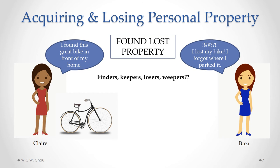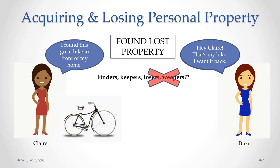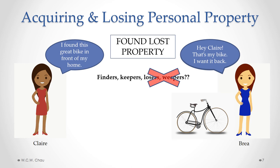Let's say Bria has lost her bike and can't find it, and Claire finds that bike and takes it home to use as her own. Remember the phrase: finders, keepers, losers, weepers. Is that actual real law? Under property law, Claire as the finder has a right to possess and use that bike over and above anyone else in the world, except the actual true owner of the bike, which is still Bria. So if Bria finds out that Claire has her lost bike and wants it back, Claire legally has to give the bike back to Bria. The last part of that phrase — losers, weepers — is not correct law. Bria as the original owner has a legal right to get the lost property back from Claire.